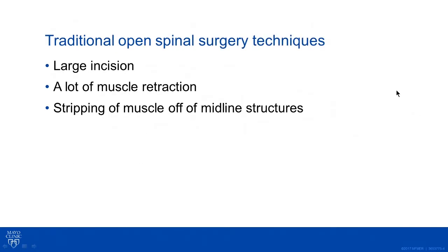Traditional open spinal surgery techniques have required a large incision and exposure of various bony elements of the spine, thereby providing anatomic landmarks for the surgeon, but it requires a lot of muscle retraction and stripping the muscles off midline structures. You're also disrupting the periosteal blood supply to these muscles, leading to atrophy and likely more pain long-term.